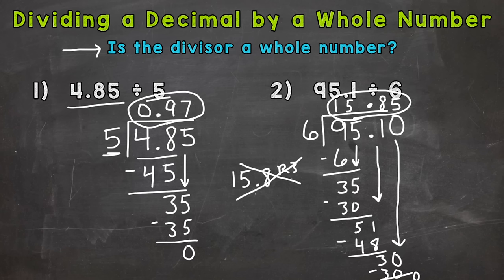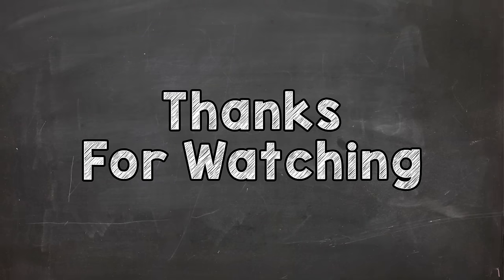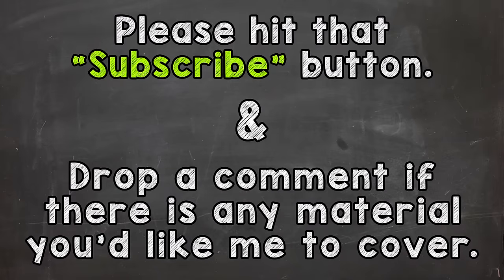And that is how you divide a decimal by a whole number. Key points here. Check to see if your divisor is a whole number. If so, bring that decimal straight up and go through your division process. I hope that helped. Thanks so much for watching. Until next time. Peace.